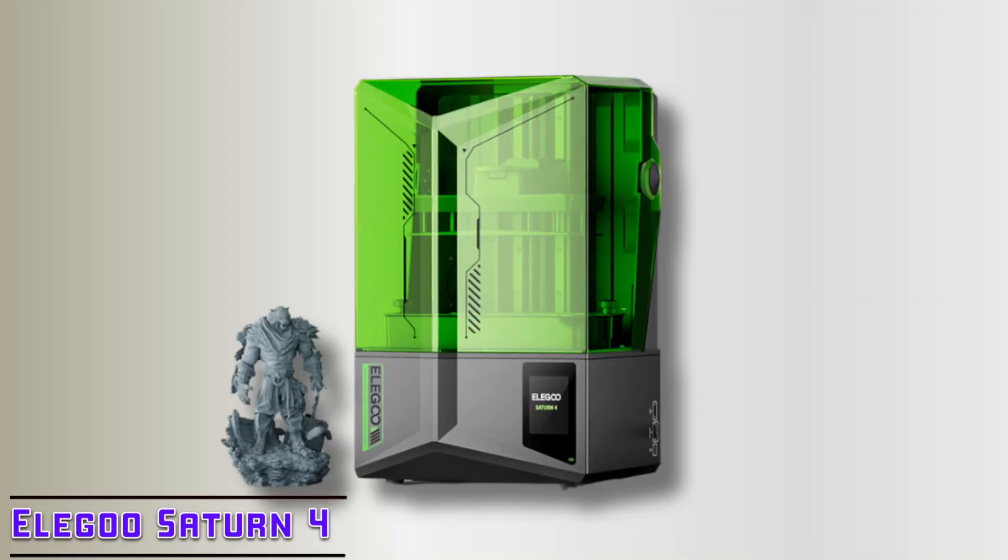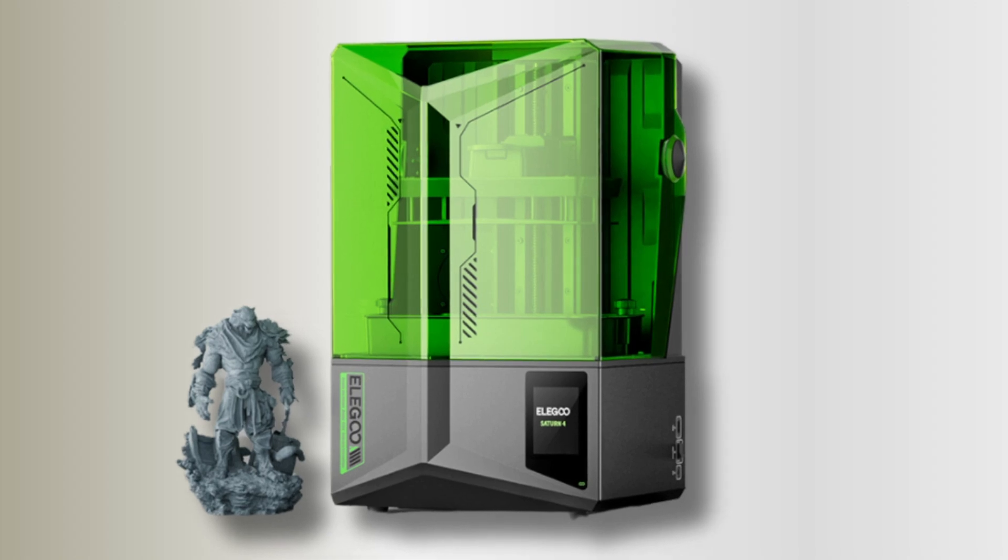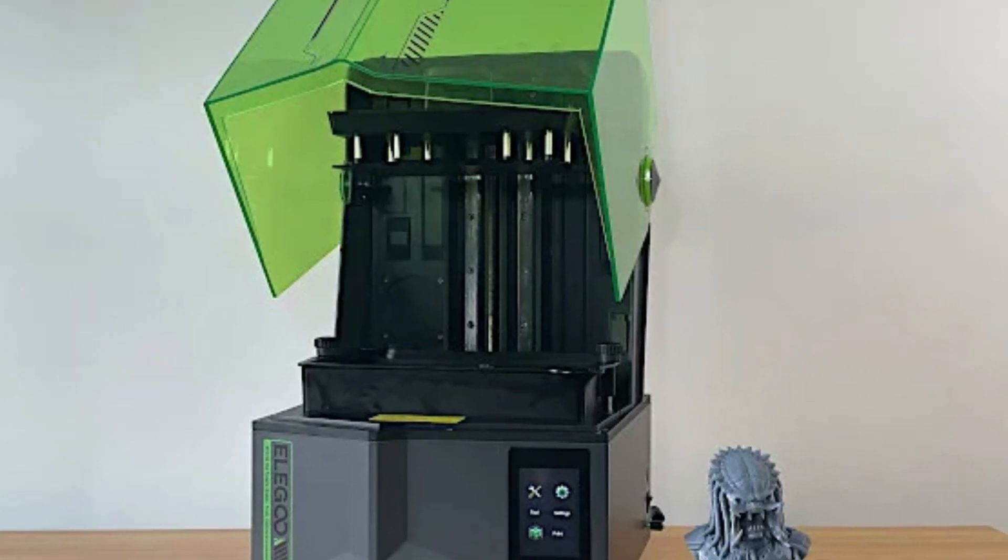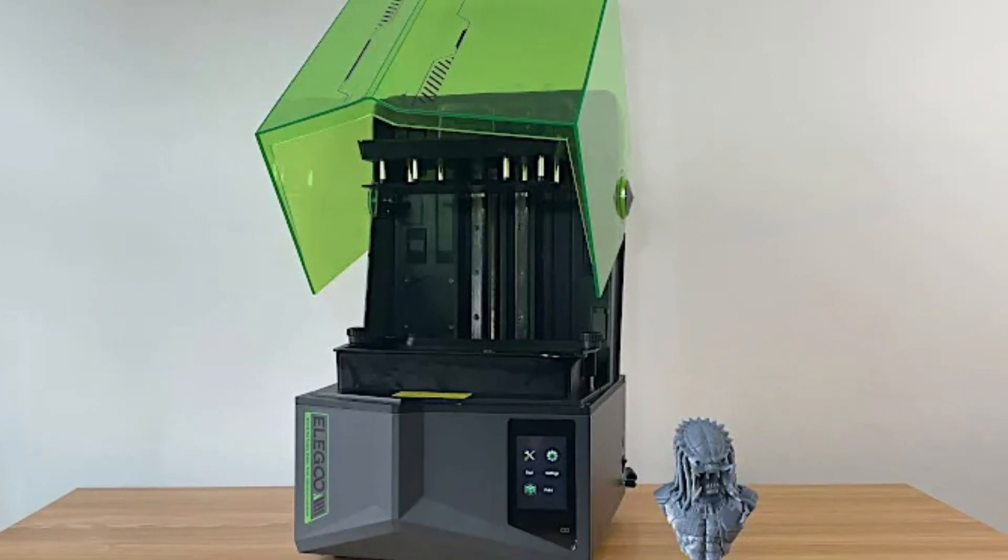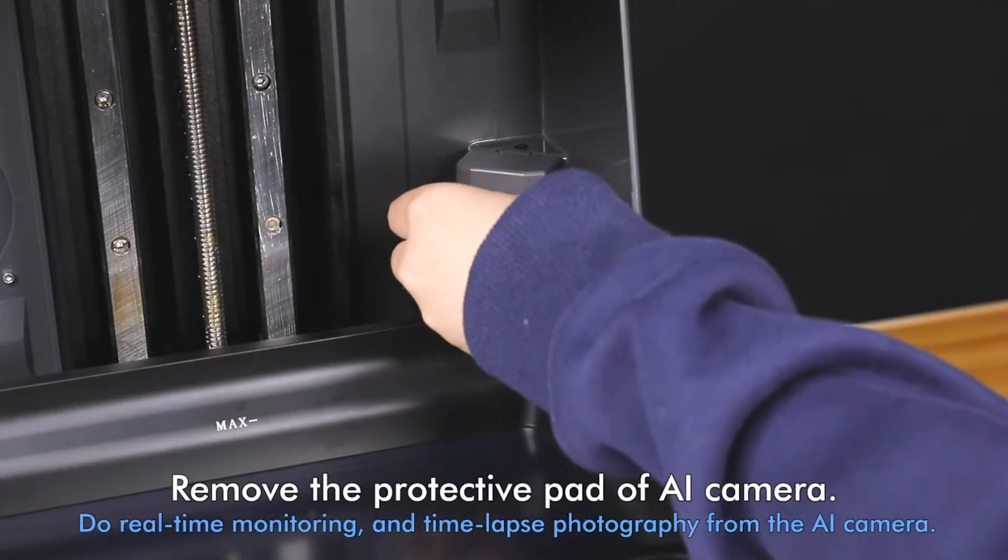At number three, it's Elegoo Saturn IV. The Elegoo Saturn IV Ultra impresses with its high-resolution, ease of use, and smart features, making it a great choice for anyone looking to print detailed models. The printer's auto-leveling and AI camera features help streamline the print process.